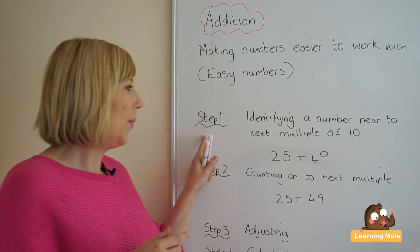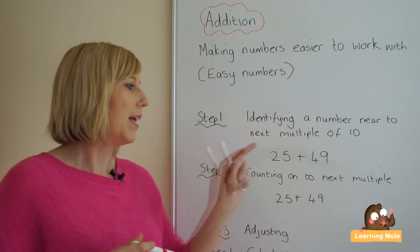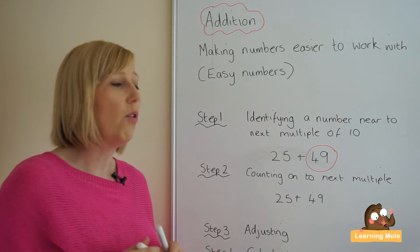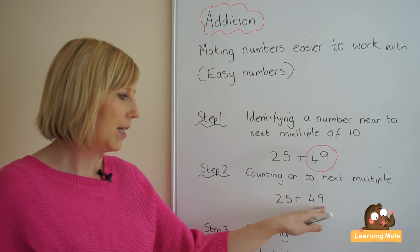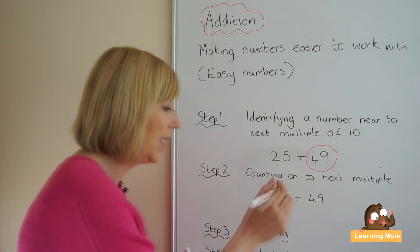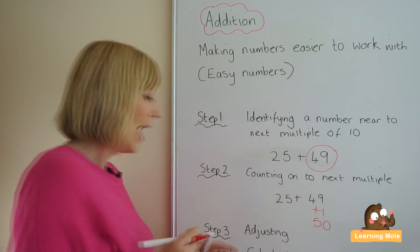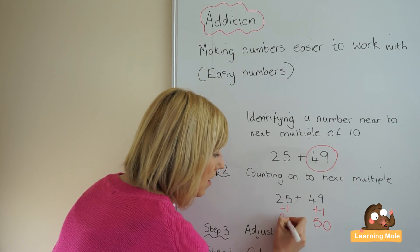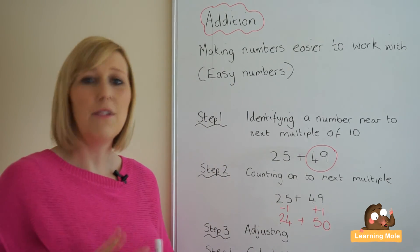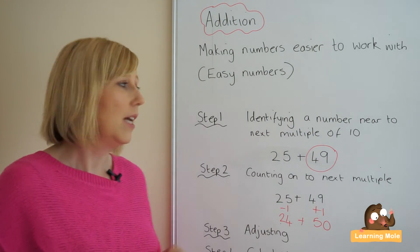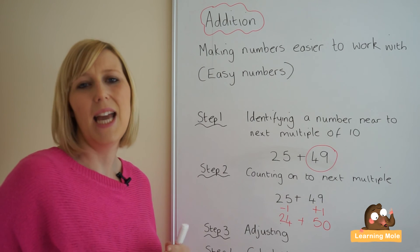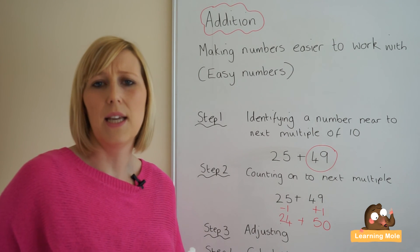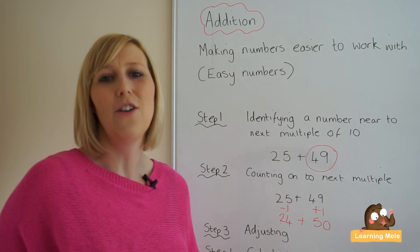Here are the steps to go over again. Step one: identify a number near to the next multiple of 10 — we identify 49 as our number near the next multiple. Step two: count on to the next multiple — 49 is close to 50, so we add one to get 50. Step three: adjust the other side to balance — if we're adding one on one side, we take away one on the other side. Step four: calculate, and you can apply the partitioning strategy here if you wish. Talk through the strategies with your child to ensure their understanding — if they understand it well, they will feel confident using it.